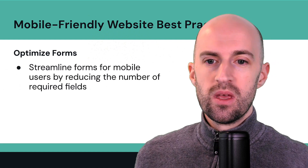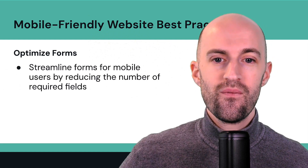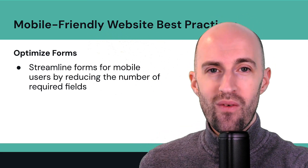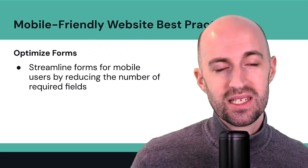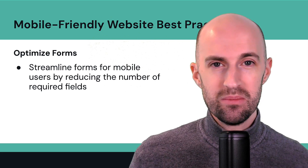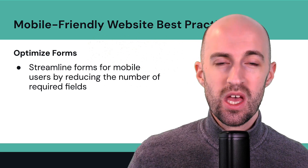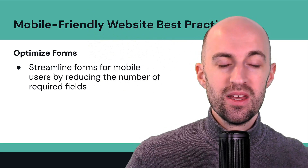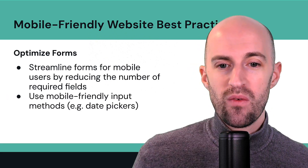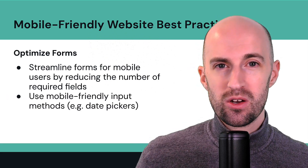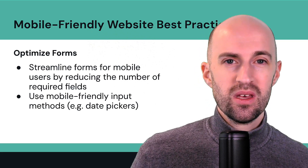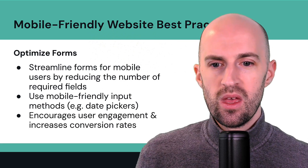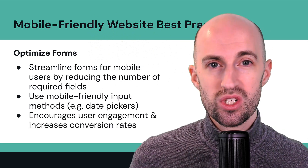Optimize forms. Streamline forms for mobile users by reducing the number of required fields. The more fields you have, the less likely people will go through to the end and submit — it's just too much information. The less information you require, the more users will be able and willing to complete the process. Use mobile friendly input methods like date pickers and make it one field at a time. These strategies really help increase conversion rates and encourage user engagement.